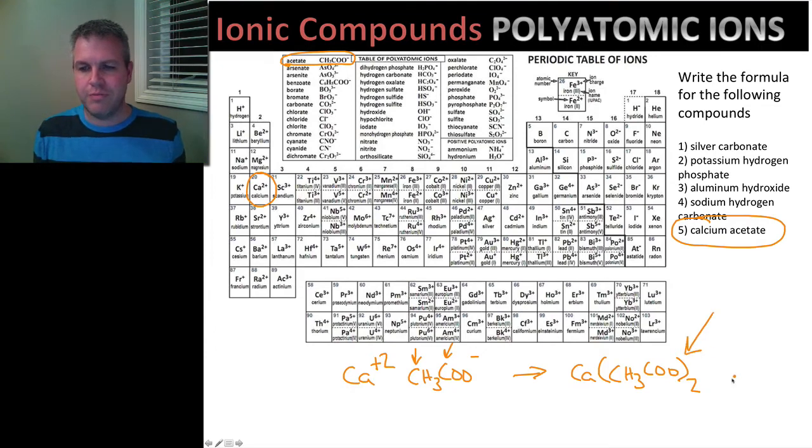So again, we use this bracket to show that the entire ion itself, this negative ion has a charge of negative one. And we need two total ions to balance that up.